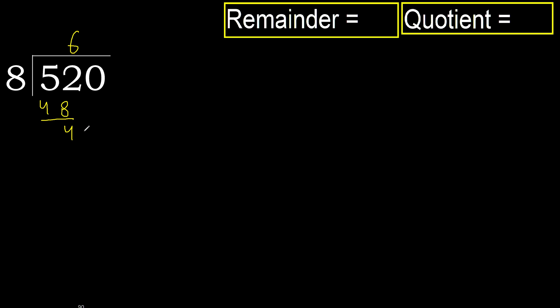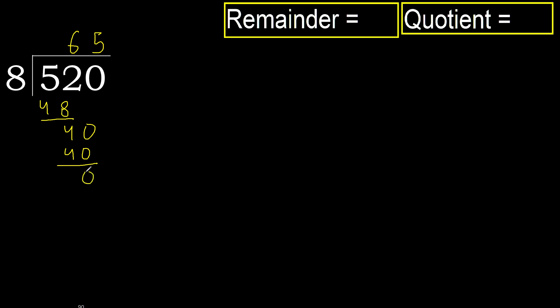Next, bring down to get 40. 8 multiplied by 5 is 40, which is not greater. Subtract: 40 minus 40 is 0.